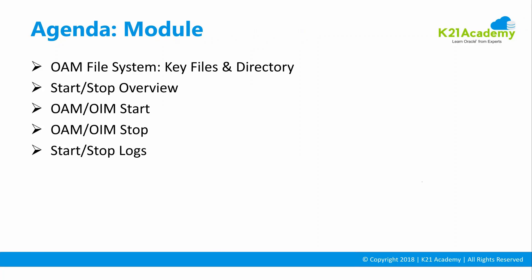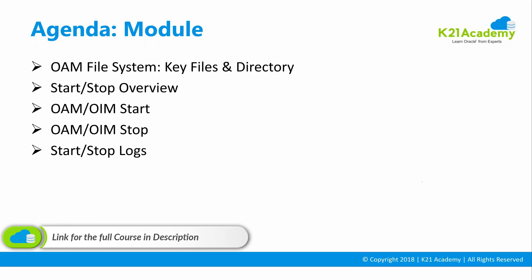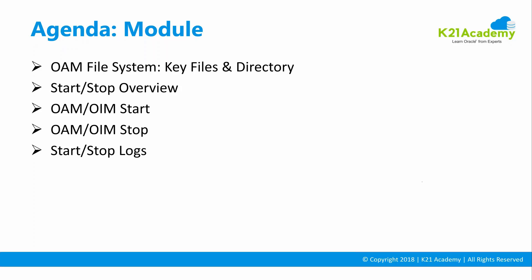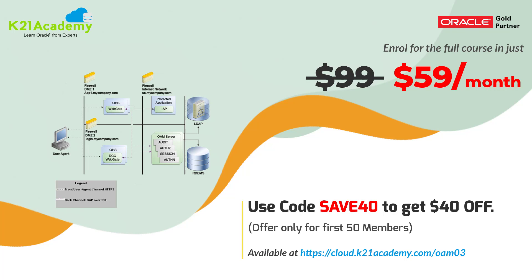To recap what was covered in this module: Oracle Access Manager file system and directory structure, various domain homes, key files like oam-config.xml, how to check the version number, OAM integration with LDAP and Oracle Identity Manager, how to start and stop services including admin and managed servers and the correct order, and log file locations. In the next module, we will look at three main consoles: WebLogic console, Enterprise Manager console, and Oracle Access Manager console.